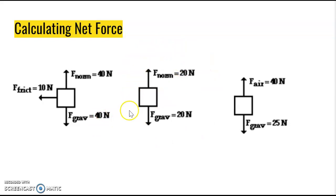In the second situation, there is only an upward normal force and a downward gravitational force — these cancel out, leaving zero net force on the block. In the third situation, we have air resistance upward at 40 newtons and gravitational force downward at 25 newtons, giving a net force of 15 newtons upward. Remember to always indicate direction. If a problem asks for the magnitude of net force, you don't need to state direction; if it just says 'calculate net force,' include direction to be safe.